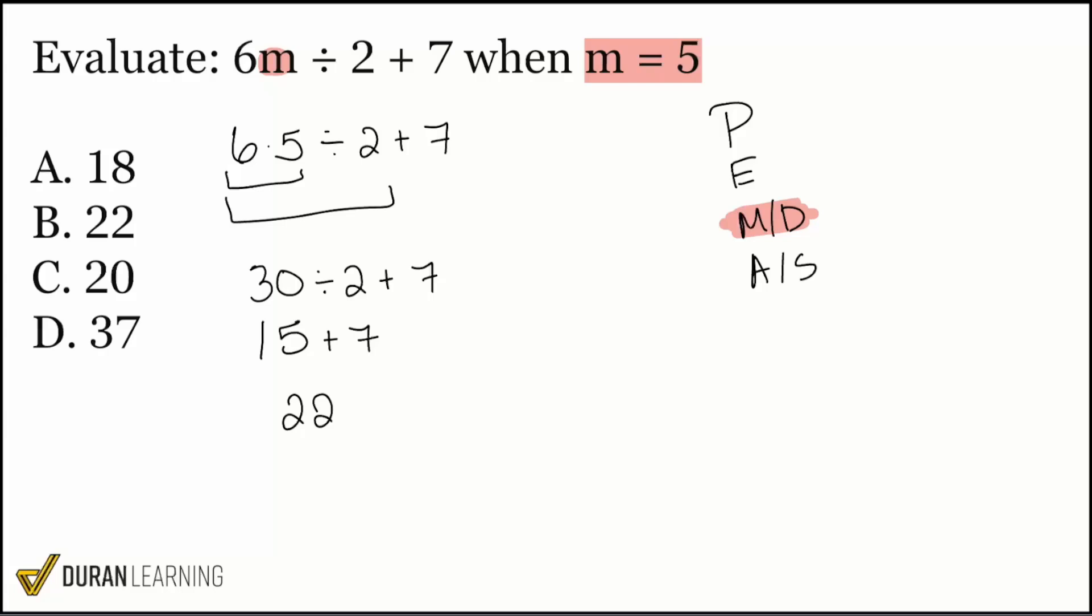But again, big, big piece of information here. When it comes to multiplication and division, it's whichever comes first, left to right. But nonetheless, the correct answer here is answer choice B, everybody. And there we go, and I hope you're ready for the next one.